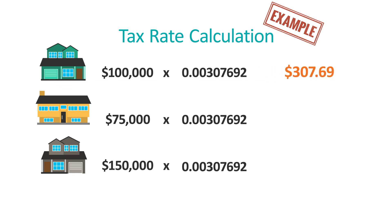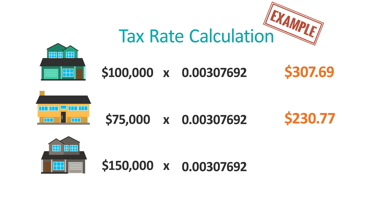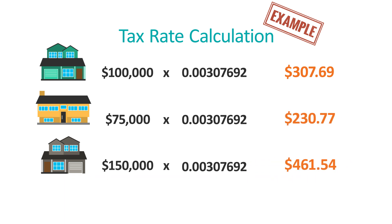We then multiply the mill rate by the original assessment value for each house. So the property tax owing would be $307.69 for Property 1, $230.77 for Property 2, and $461.54 for Property 3.